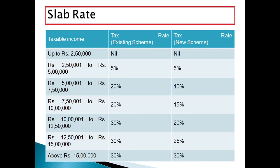If your income is between ₹2.5 lakhs and ₹5 lakhs, you have to pay 5% tax on the difference between your income and ₹2.5 lakhs. For example, if your income is ₹3 lakhs, you pay 5% on ₹50,000. If your income is ₹5 lakhs, you pay 5% on ₹2.5 lakhs.